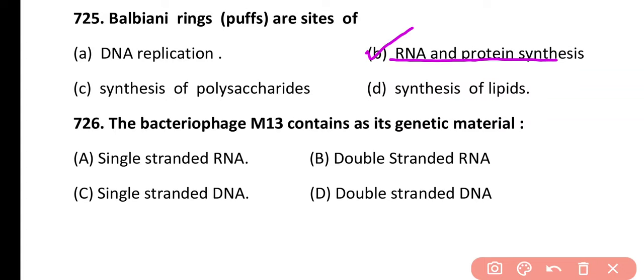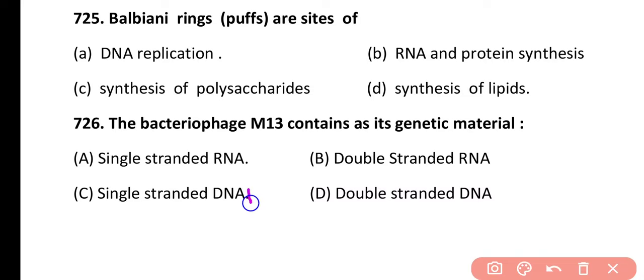Question 726. Bacteriophage M13 contains as its genetic material: single-stranded RNA, double-stranded RNA, single-stranded DNA, or double-stranded DNA. Correct answer is option C. The genetic material of bacteriophage M13 is a circular single-stranded DNA molecule.